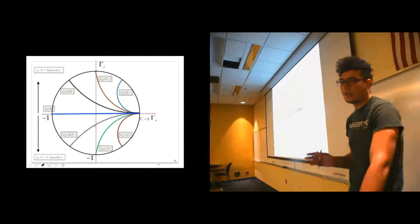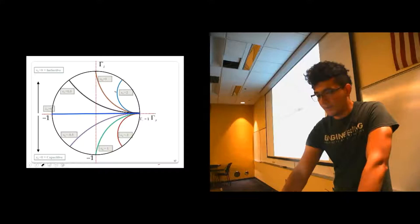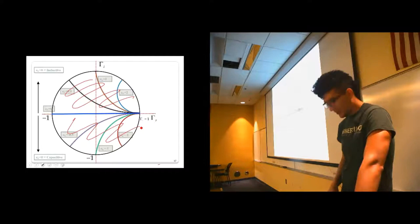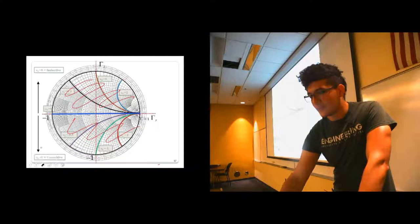So for any x that you find in these points right here or in this region, for any x that you read in this region, you're reading inductive values or positive values for x. Anything that you read here, negative. And that's it. That's the Smith chart.